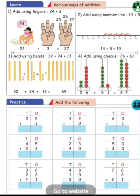Second standard, various ways of addition. Add using fingers: 24 plus 3. In the finger addition method, we use fingers to do addition. For 24 plus 3, we leave every finger to count up to 3: 25, 26, and 27. So 24 plus 3 gives 27.